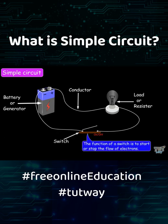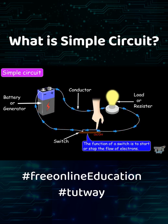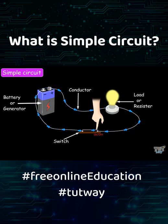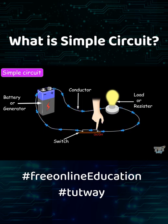The function of a switch is to start or stop the flow of electrons. When the switch is closed or on, the circuit is complete and the current starts flowing through the closed circuit. Thus a closed circuit is a circuit with no gaps in it.